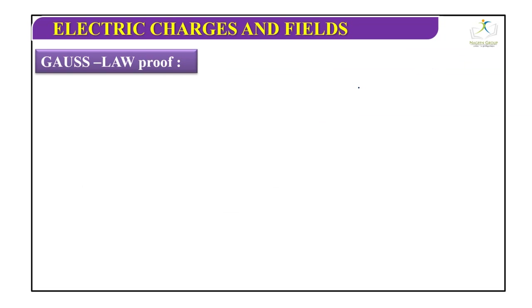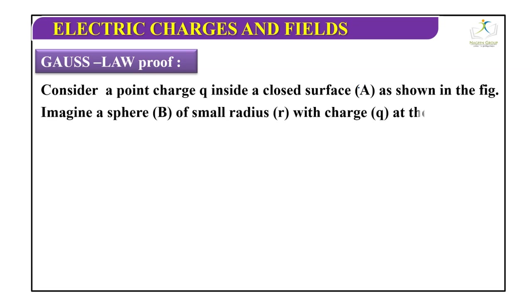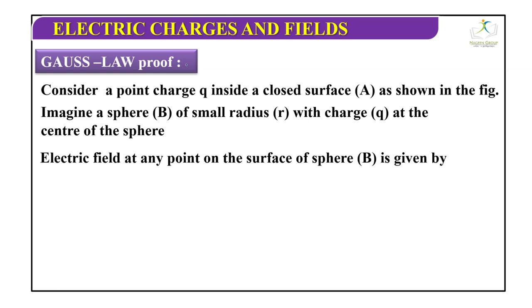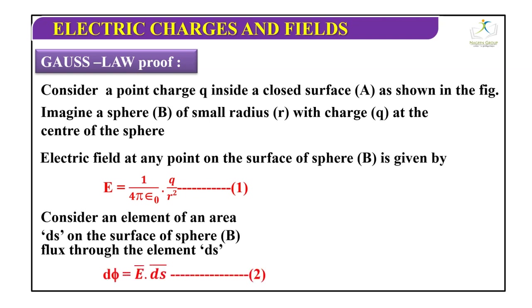Gauss law proof: Consider a point charge Q inside a closed surface A as shown in the diagram. Imagine a sphere B of radius small r with charge small q at the center of the sphere. The electric field at any point on the surface of sphere B is given by 1 by 4 pi epsilon naught times Q by R square. This is the first equation. Now d phi equals vector E dot vector dS. This is the second equation.